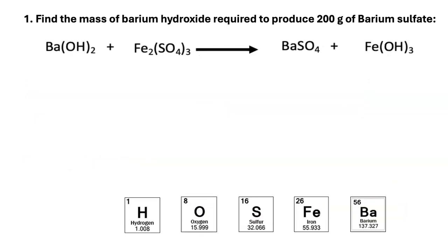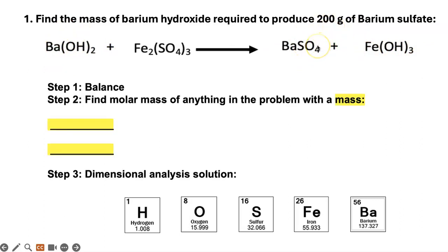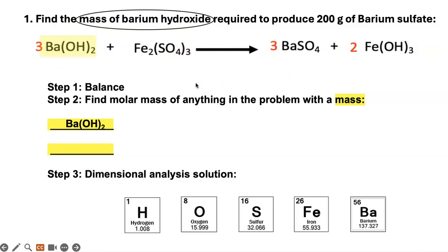Let's look at a problem. Find the mass of barium hydroxide required to produce 200 grams of barium sulfate. You have to remember from past units what the formulas are. There are two barium compounds: barium hydroxide and barium sulfate. The given thing is barium sulfate, and you have to find the mass of barium hydroxide. First you balance the equation, then you find the molar mass of anything in the problem that has a mass written. When you balance the equation, you will get the mole ratio between them.